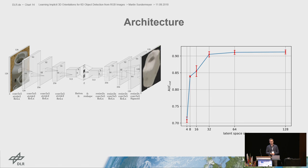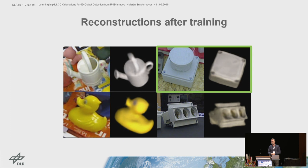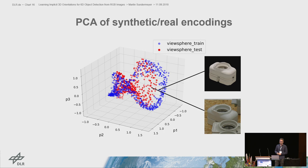After training, reconstructions of real images look like this — examples from the Linemod and TLS datasets. You can see how the augmented autoencoder is able to segment objects from the background and can even reconstruct occluded parts of an object. This figure shows the first three principal components of synthetic and real encodings recorded from a view sphere. Equivalent object views produce similar latent codes independent of the domain.